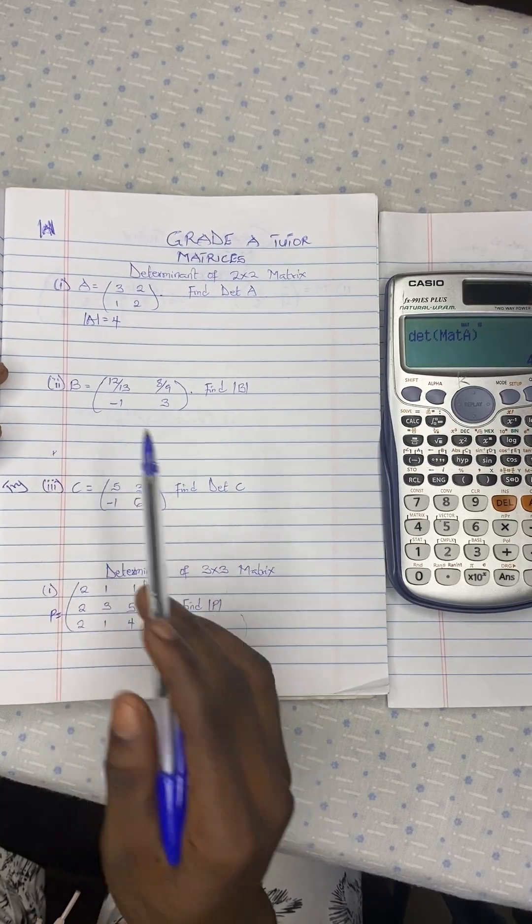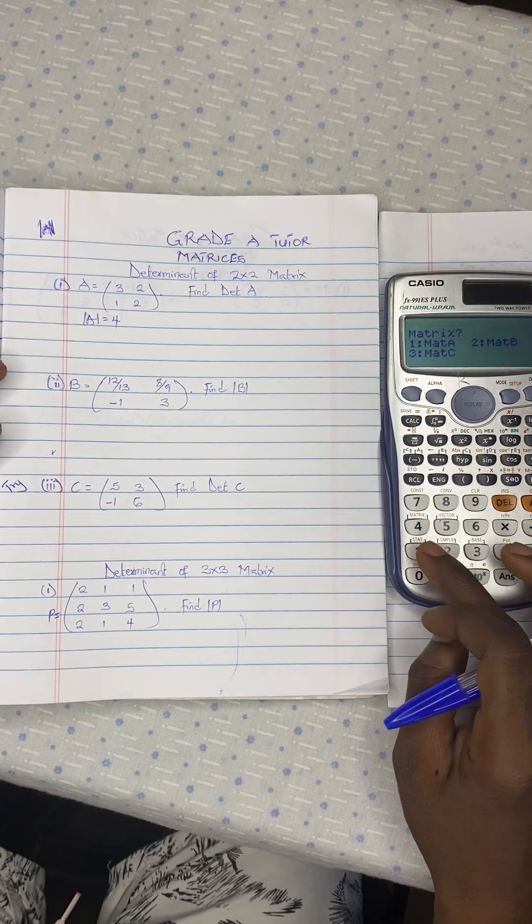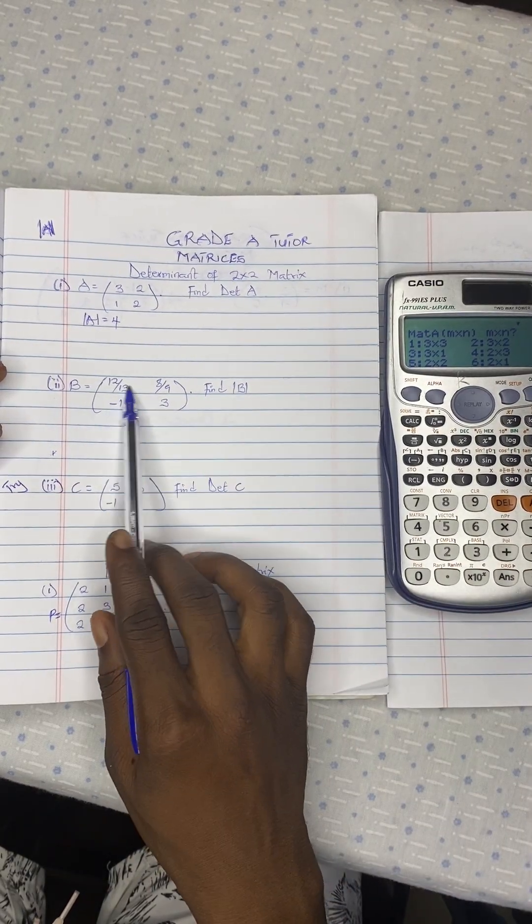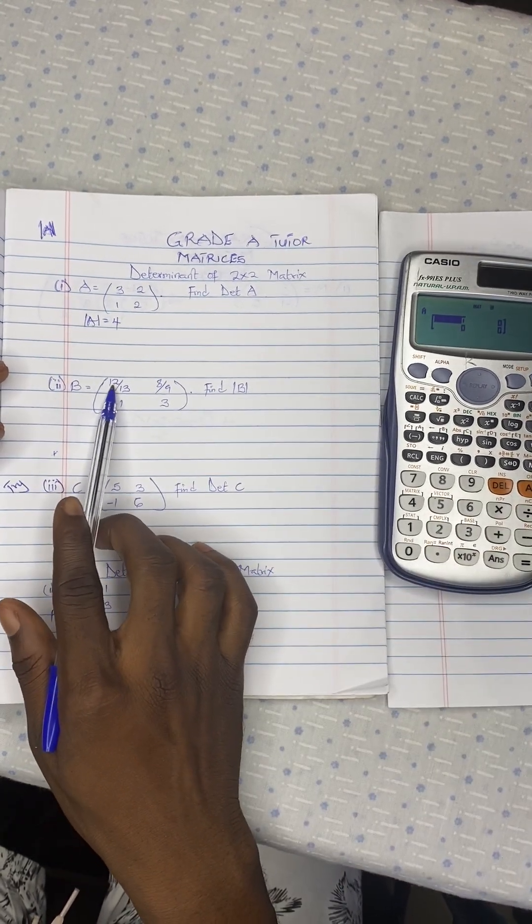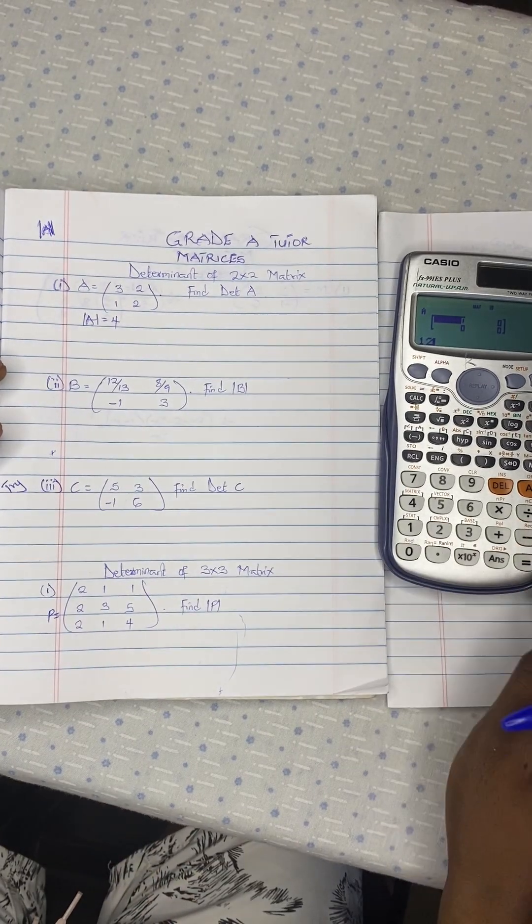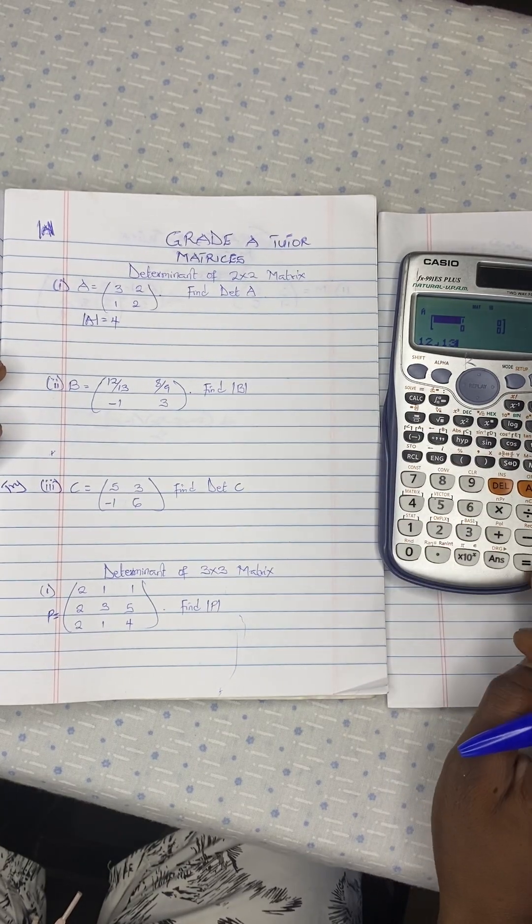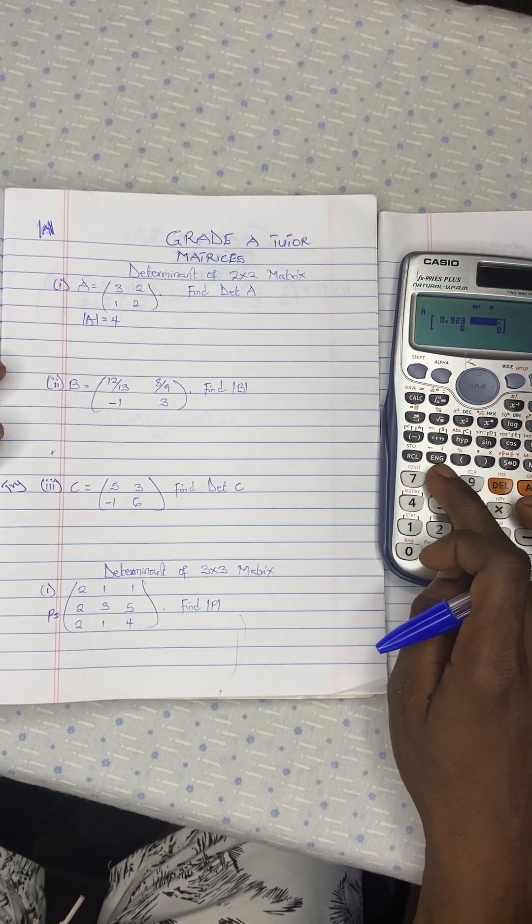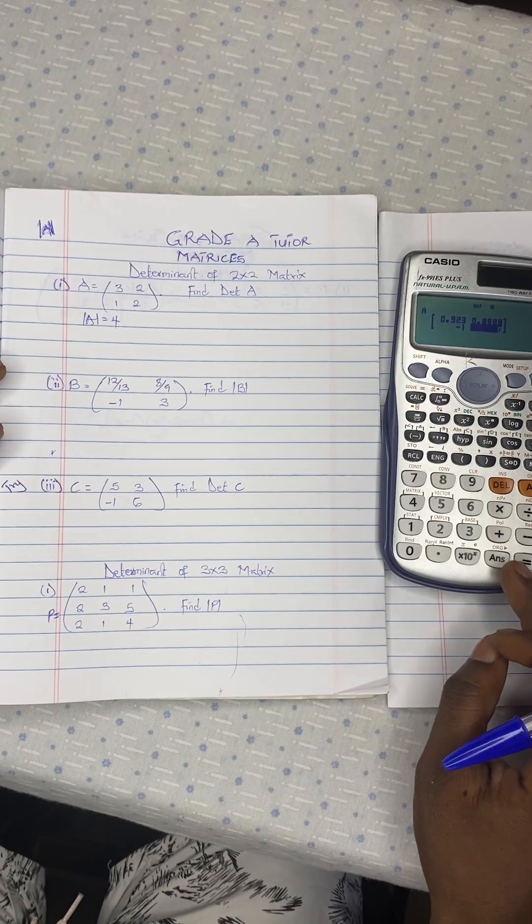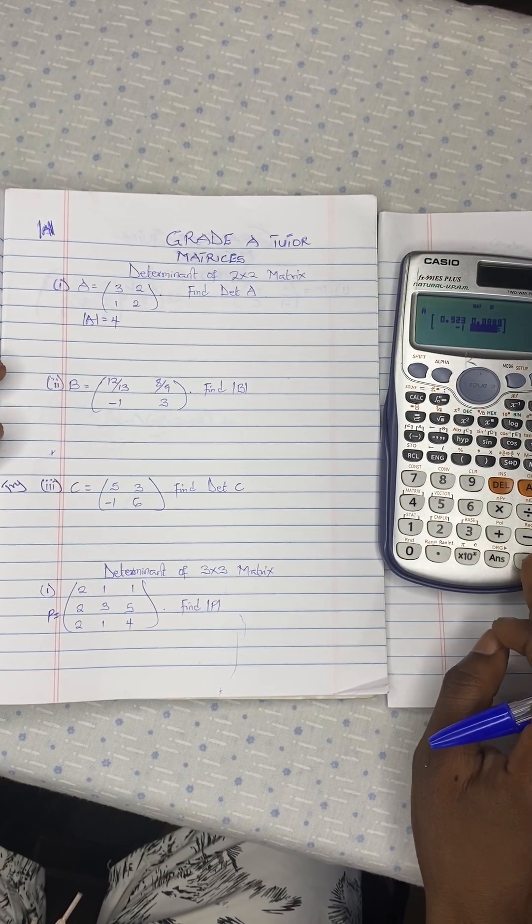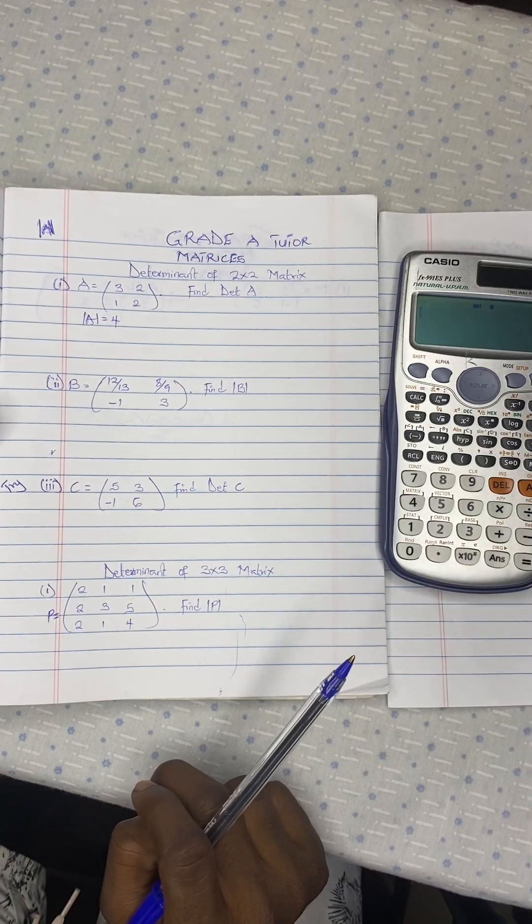Let's move on to the second one. We use the same procedure. Mode option 6. Press on this one. And what is the dimension? 2 by 2. And what is the first one? That is 12 over 13. So 12 divided by 13. Or you can use this over 13. And it is there. 8 over 9. You have negative 1 here. You have 3 here. Right. So you are done with the matrix. You save it.